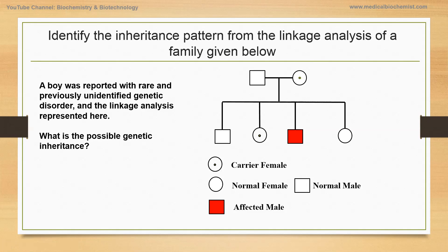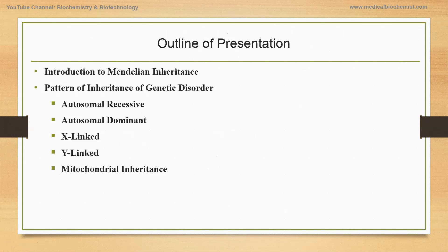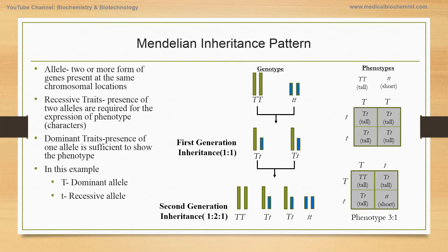Think about it. We'll get back and answer the question at the end of the lecture. Here is the outline of my presentation. I'm breaking this lecture into two parts. First, I will introduce Mendelian inheritance. Then I will go over the pattern of inheritance of genetic disorders, including autosomal recessive, autosomal dominant, X-linked, Y-linked, and mitochondrial inheritance. So let's talk about Mendelian inheritance now.